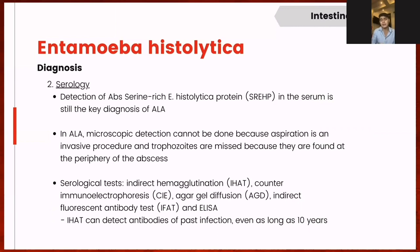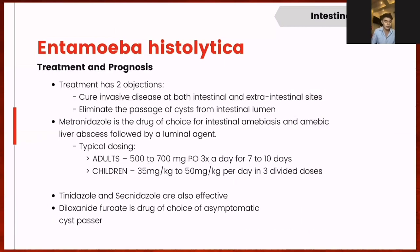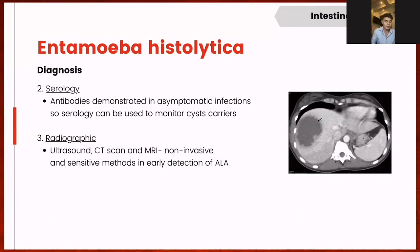Serology is another technique used in diagnosis. Detection of serine-rich Entamoeba histolytica protein (SREHP) antibodies is a key diagnostic technique for amoebic liver abscesses. In ALA, microscopic detection cannot be done because aspiration is invasive and trophozoites are found at the periphery of abscesses. Serological tests include indirect hemagglutination (IHAT), counter immunoelectrophoresis (CIE), agar gel diffusion (AGD), indirect fluorescent antibody tests (IFAT), and ELISA. IHAT can detect antibodies from past infection even as long as 10 years later. Radiography using ultrasound, CT scan, and MRI are non-invasive and sensitive enough for early detection of amoebic liver abscesses.